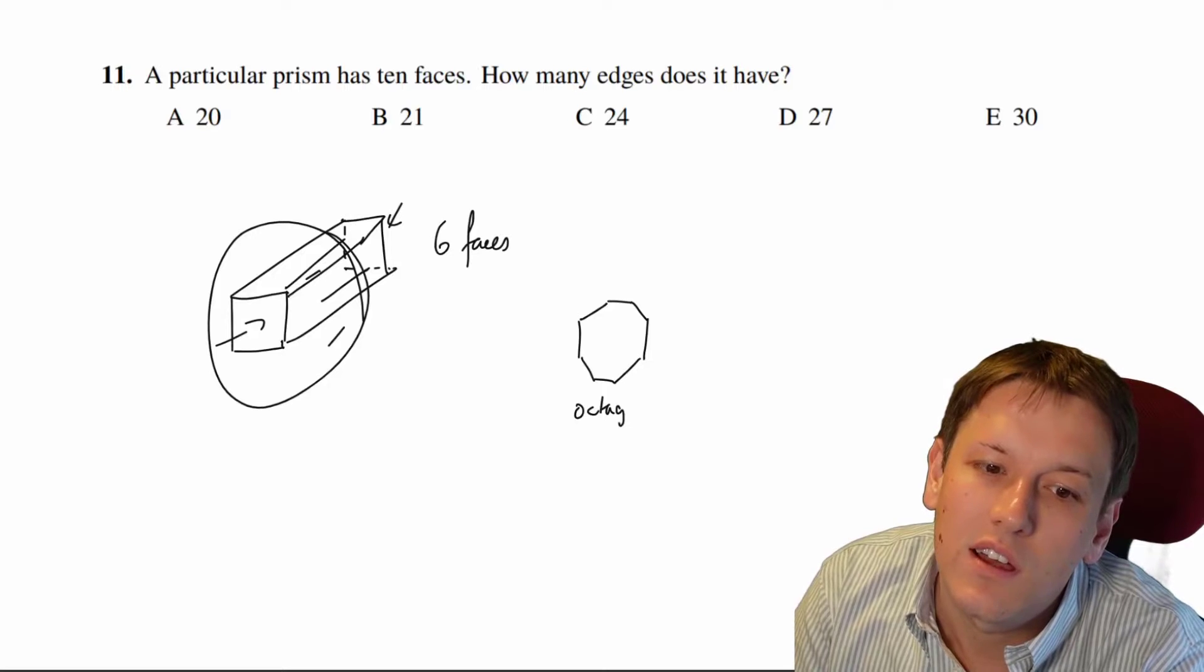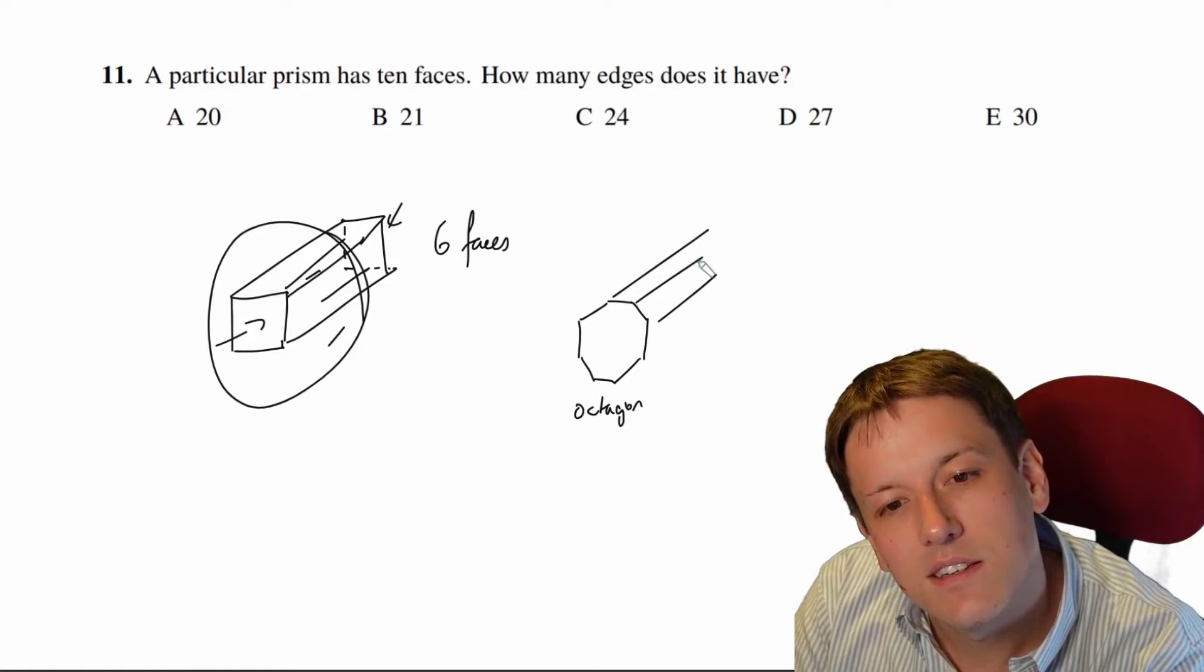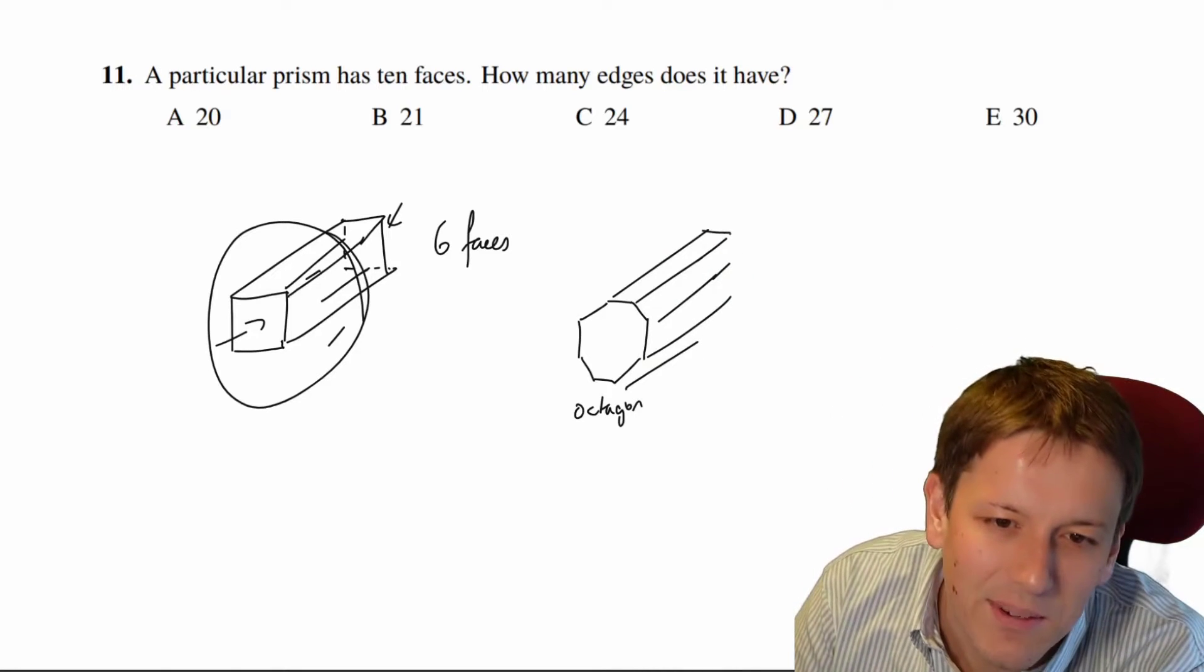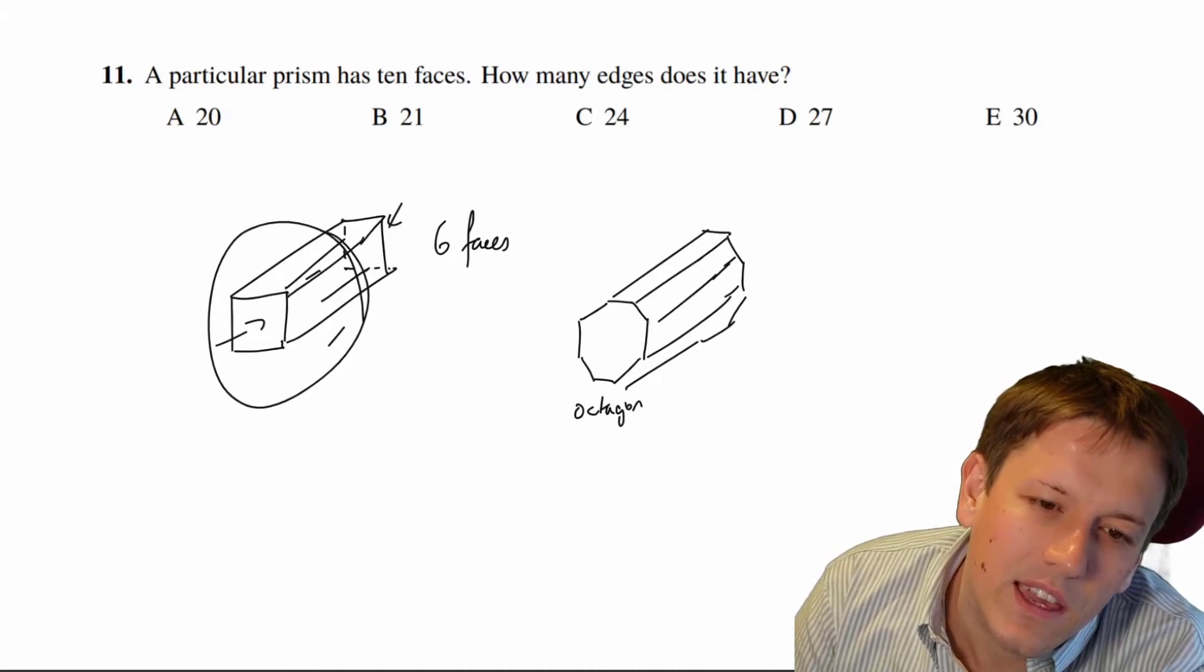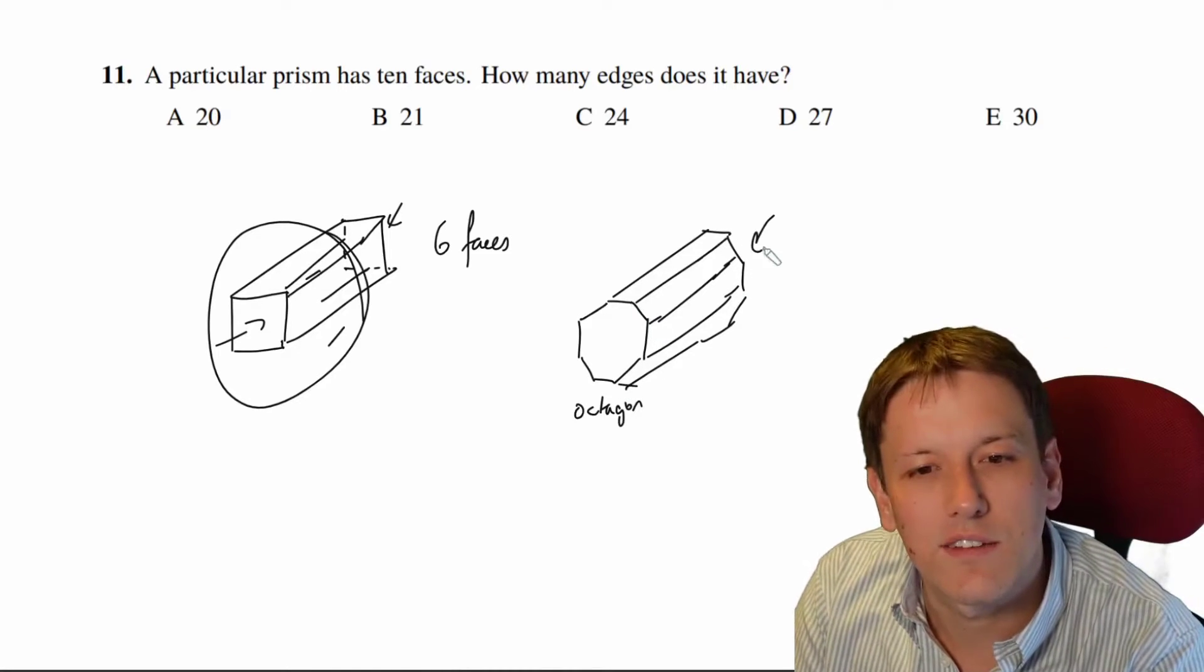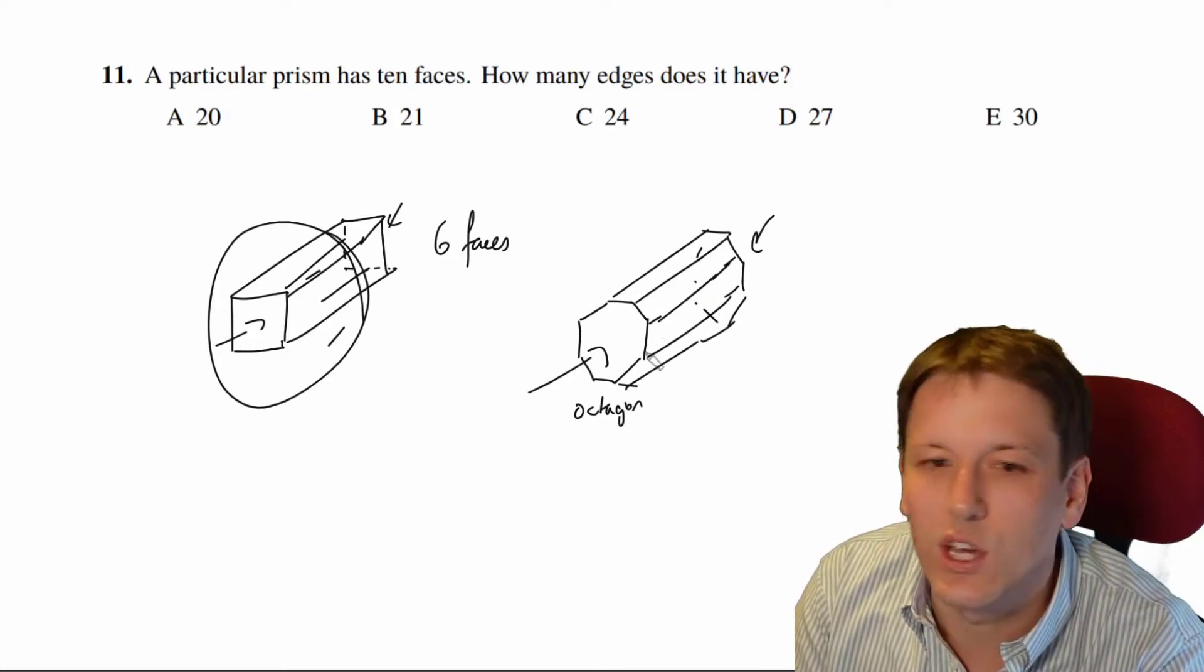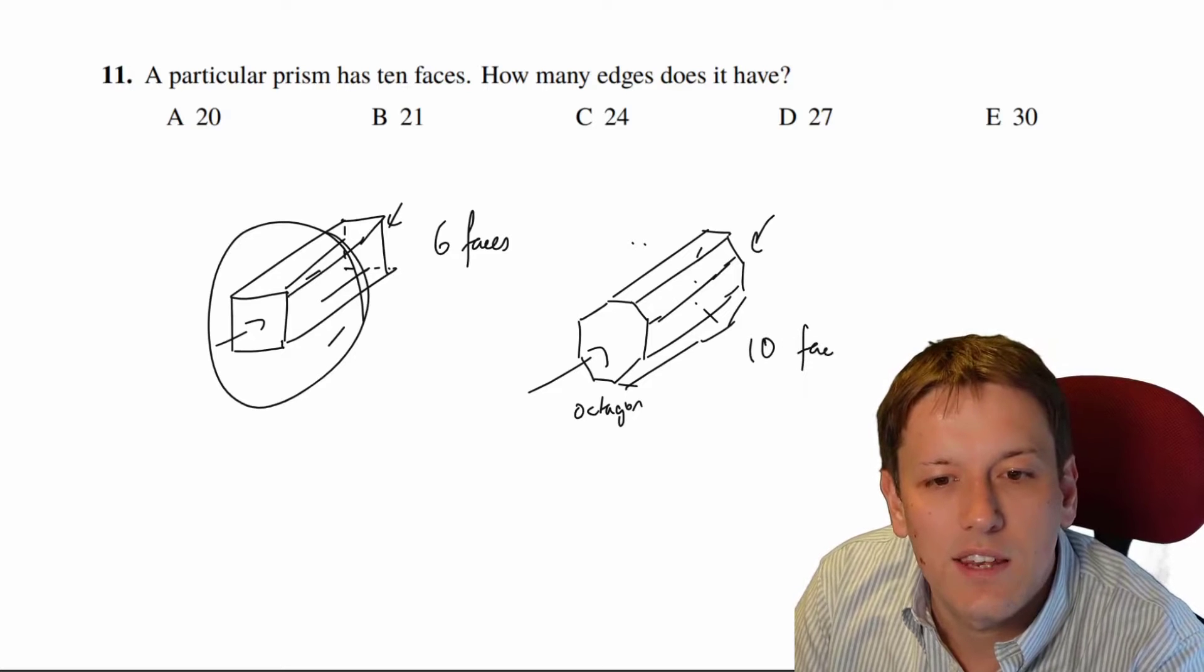So it's going to have to be an octagon on the end here and then if I extend that as a prism to another octagon on the other side I'm not sure how well I'm going to draw this, let's give it my best shot here. Then I will have 10 faces. I'll have a face on the back here, face on the front and I'll have the eight that go around here. So that is 10 faces.